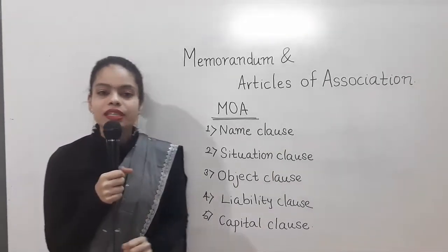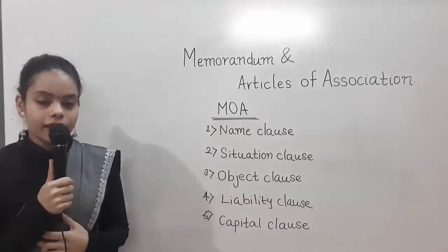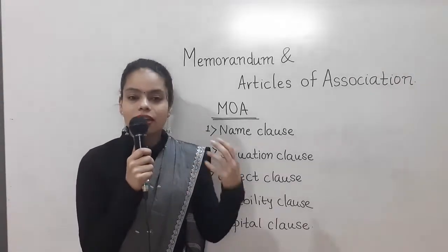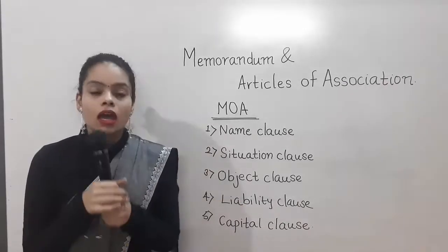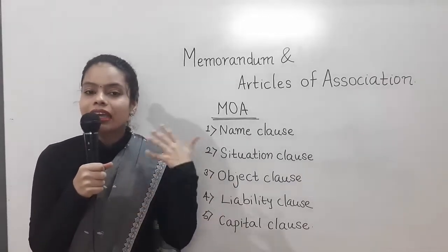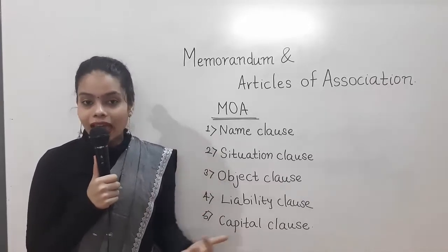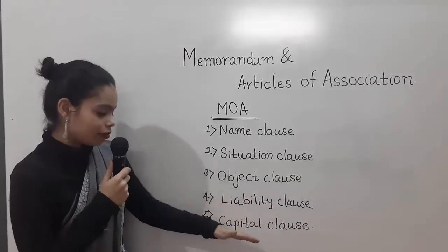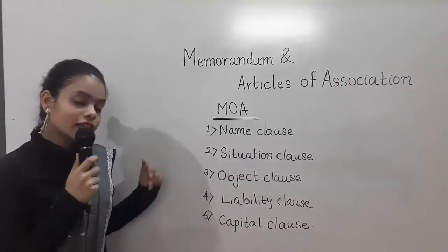MOA is a document and Section 4 of Companies Act 2013 tells us what all must be included in the memorandum of association of a company. In this document, the following information must be written: first is the name clause — the name of the company; the situation clause — where the registered office of the company will be situated; then the object clause — what is the objective of the company. The object clause is the most important clause because anything done beyond the objective mentioned in MOA is considered an invalid act. Then the liability clause, the capital clause.